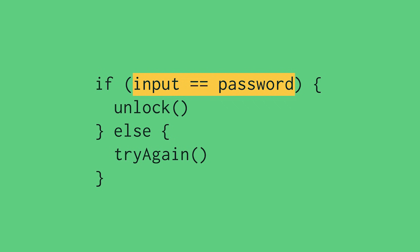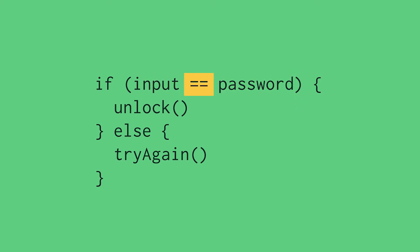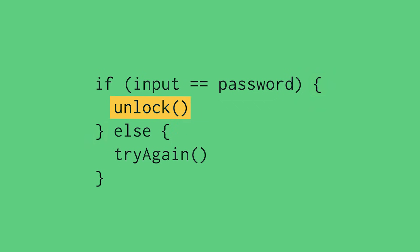Here, we have two words: input and password. These are what are called variables, and they store all types of information, like numbers, words, a photo, and more. You can name your variables whatever you want. I've named these two variables input and password, because I want to compare what the user typed in — the input — to the password that's stored on the phone. The two equal signs means that we're comparing these two variables to see if they're the same. So we can read this as: if the input is equal to the stored password, then execute this next bit of code inside these two matching curly braces. And inside there, there's a line of code that will unlock the phone.